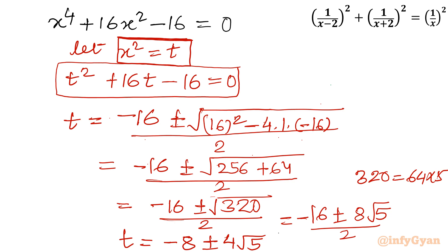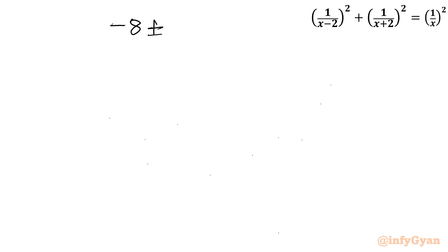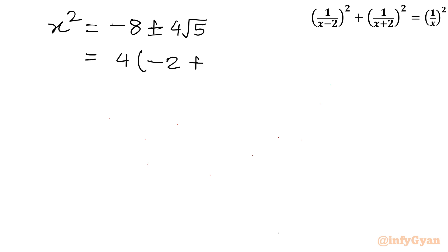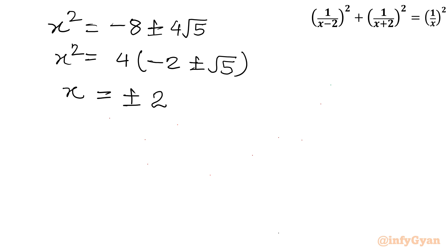Now let's put the value of t back in terms of x squared. So x squared equals minus 8 plus or minus 4 root 5. Taking 4 common, x squared equals 4 times (minus 2 plus or minus root 5).